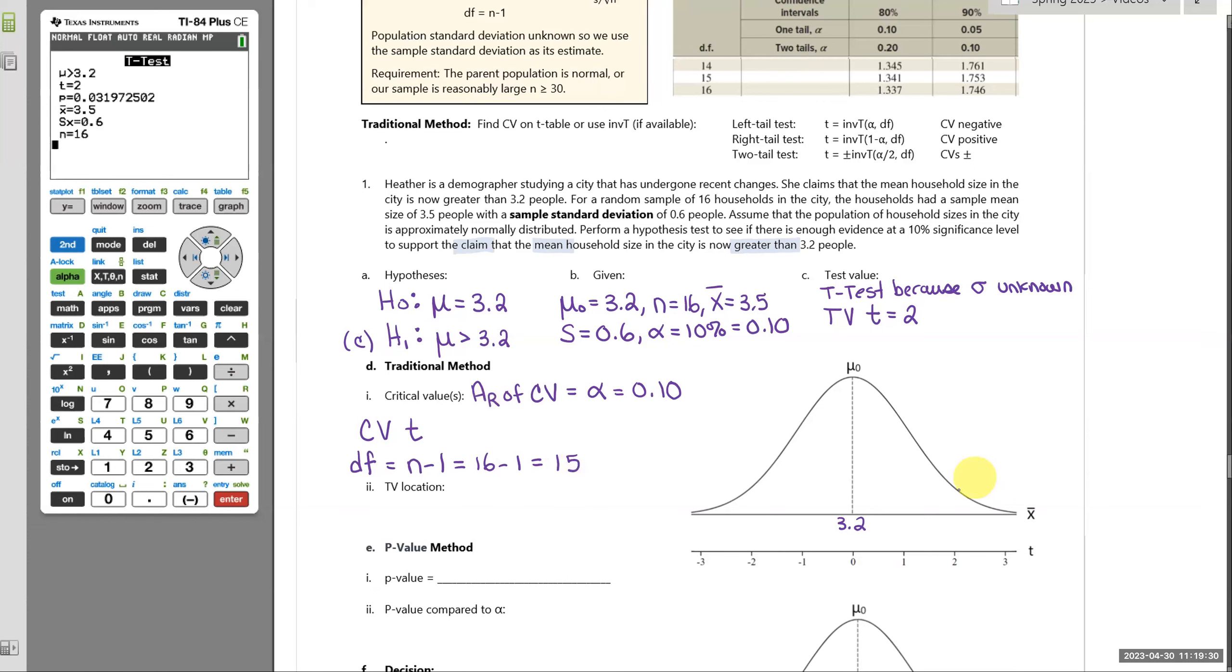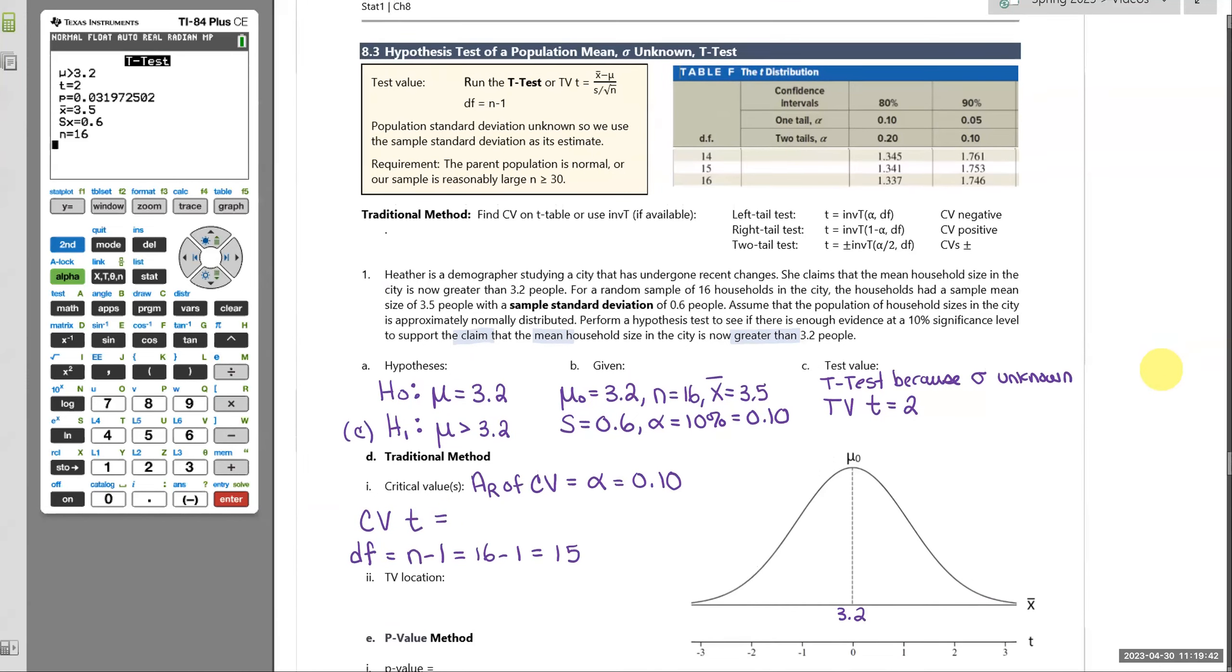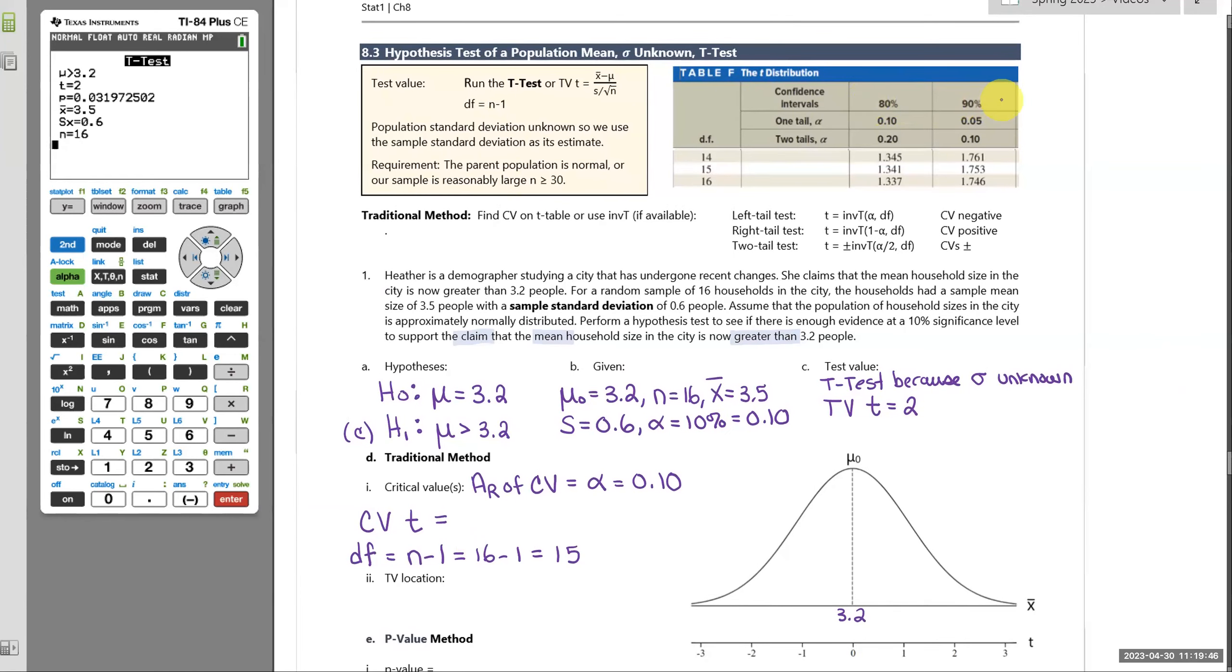And for a right tail test, our critical value is going to be somewhere on the right. So I'm going to show you how to find that critical value using your t table first. So our t table. Previously, we did confidence intervals. And now when we do hypothesis testing, we're interested in whether all of our alpha is in one tail or the alpha is split into two tails. So this is a one tail test. All of our alpha will be on the right. And that value for alpha was 0.10. So there's our column. Alpha is 0.10 in one tail. Degrees of freedom is 15. So that value is our critical t value.